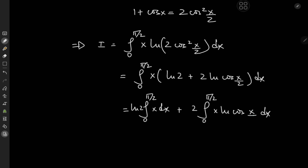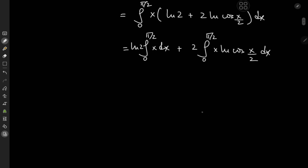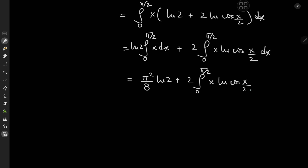The first integral here is pretty standard — it evaluates to π²/8 times log 2, so the first term on the right-hand side is π²/8·log 2 plus twice the integral from 0 to π/2 of x times log(cos(x/2)) dx.